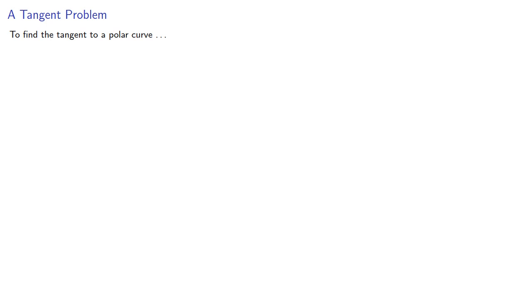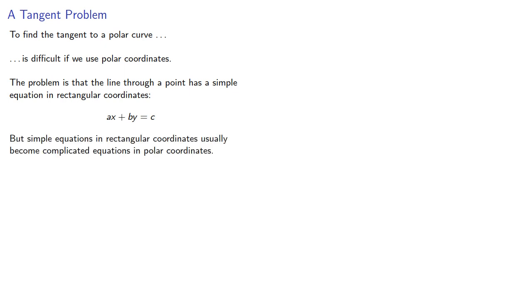To find the tangent to a polar curve is difficult if we use polar coordinates. The problem is that the line through a point has a simple equation in rectangular coordinates, but as we saw, simple equations in rectangular coordinates usually become complicated equations in polar coordinates.